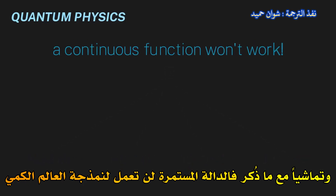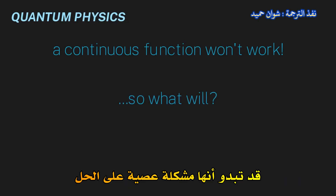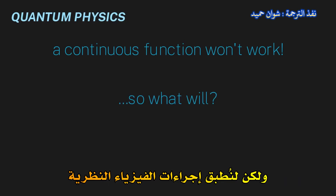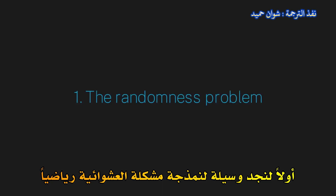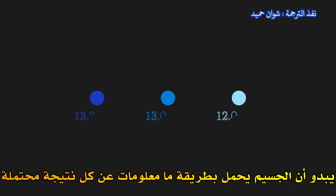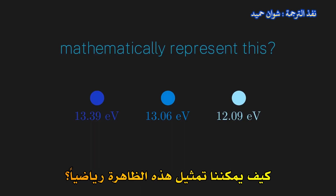So clearly a continuous function won't work to model the quantum world. So what will? It may seem like a daunting problem to solve, but let's put on our theoretical physicist hats and see what we can deduce from our conclusions. First, let's find a way to mathematically model the randomness problem. It seems like before we make a measurement, the particle somehow holds the information on every possible outcome we could get.